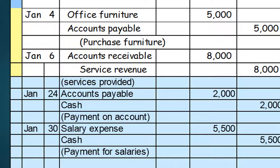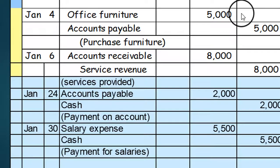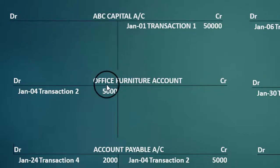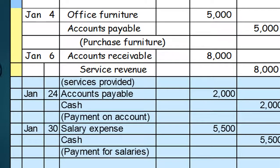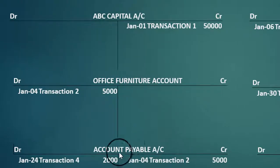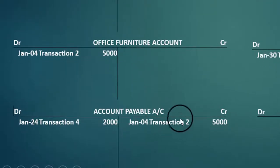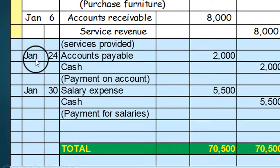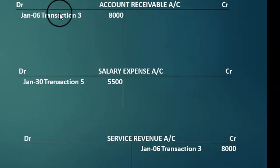Always remember: in the ledger we post entries from the journal. The second entry is office furniture 5,000, accounts payable 5,000. So office furniture debit 5,000, transaction number 2, January 4th. And simultaneously we post to accounts payable credit 5,000, transaction number 2, January 4th. This is how we enter all entries completely and simultaneously.